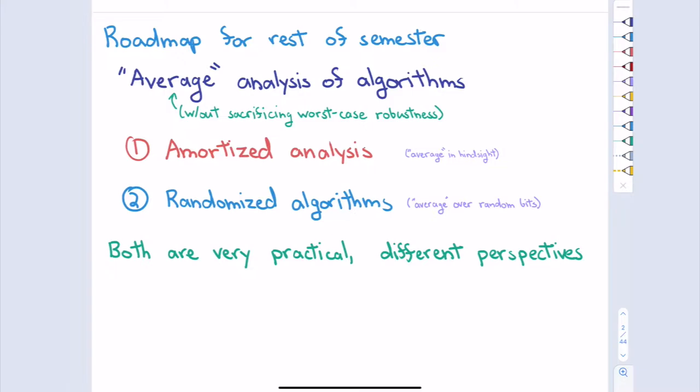There will be two varieties. One is called amortized analysis, mostly associated with data structures, although one of the lectures we'll talk about how to use amortized analysis to get some faster max flow algorithms. Today we'll mostly talk about data structures. The other variety is randomized algorithms — a different sense of 'average,' being average over random bits. Among other topics, we'll do hash tables and randomized sorting, which is all very practical.